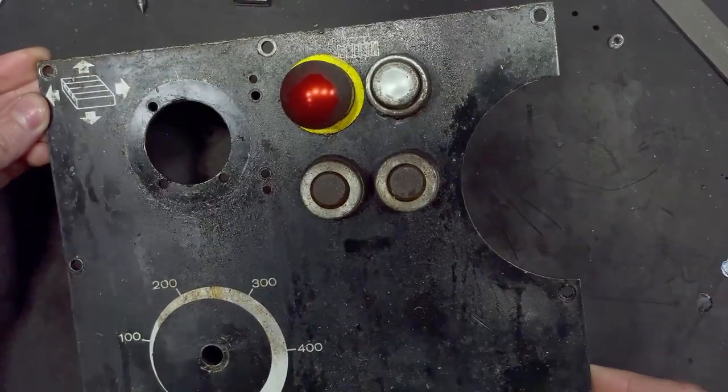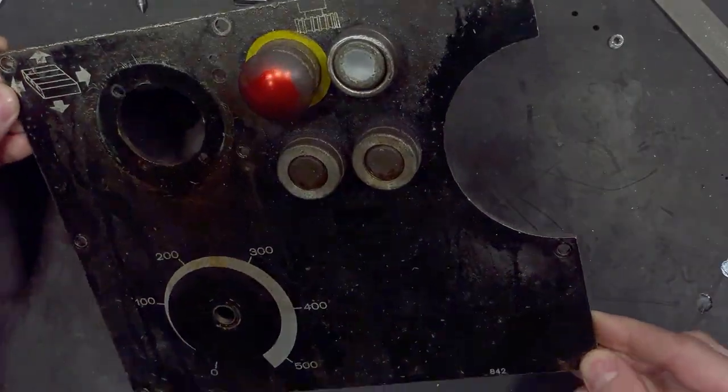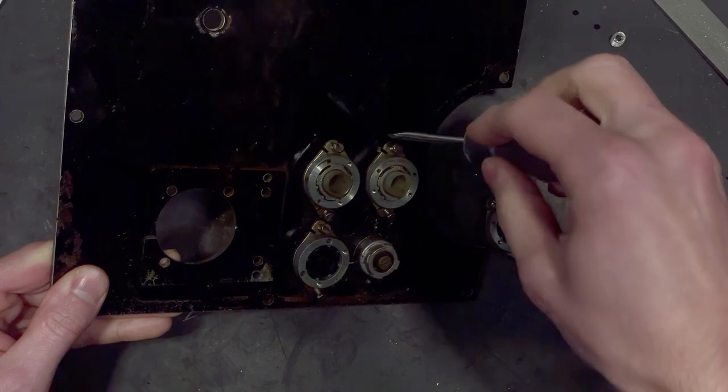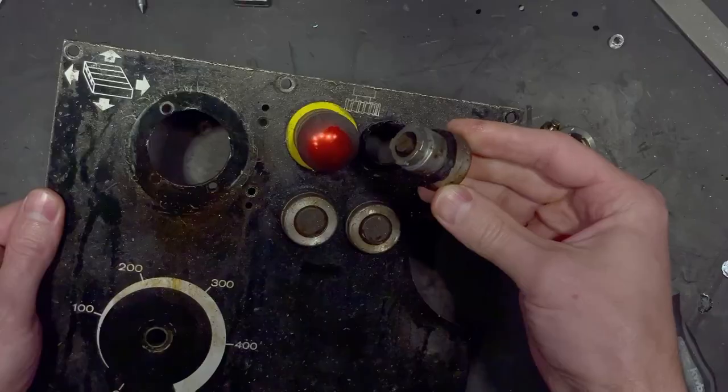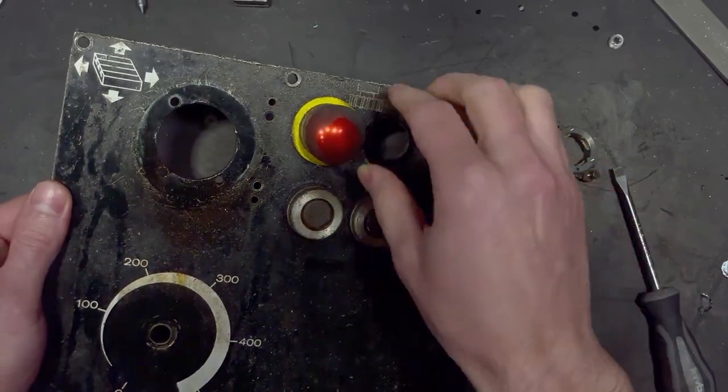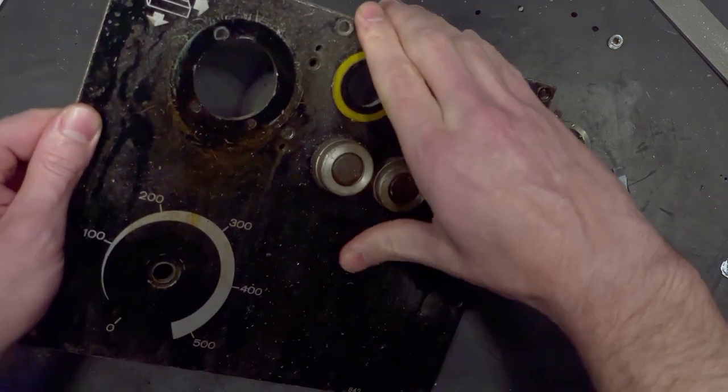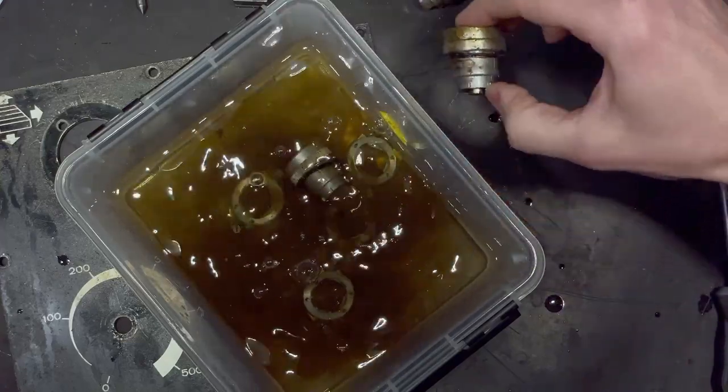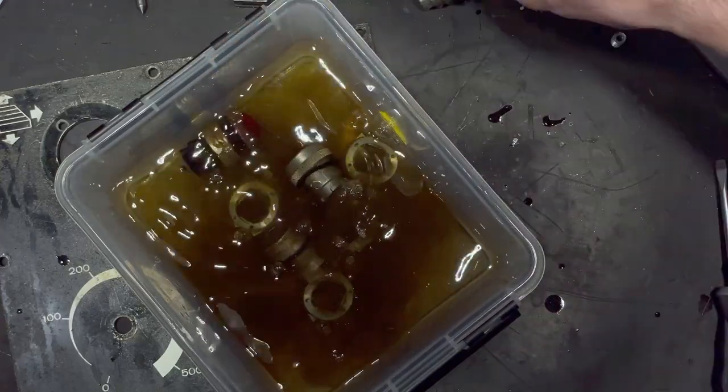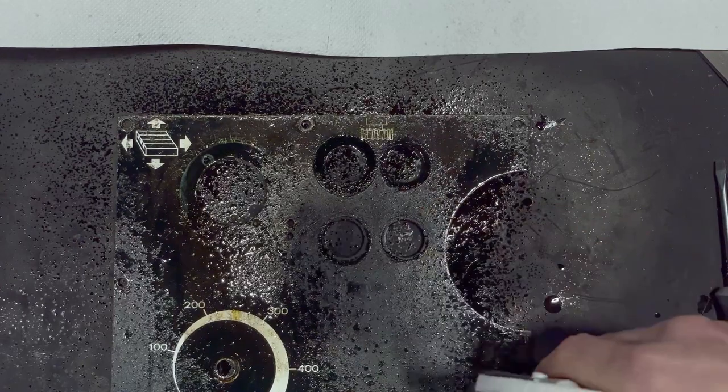Before remounting the joystick into the mill I want to clean up that front panel. That tough layer of solidified oil I got to know in the first episode is all over the buttons as well. I give the ultrasonic cleaner another try with the buttons and meanwhile clean up the front panel the old fashioned way.